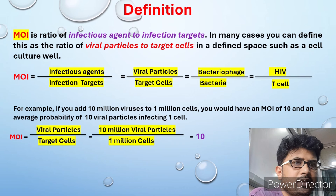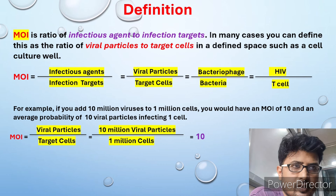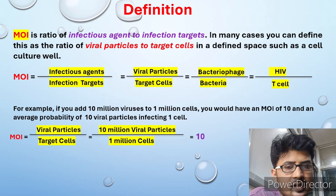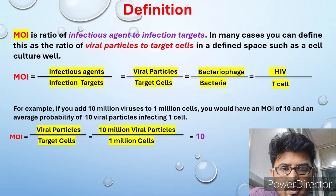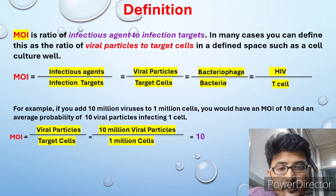If you consider the definition, MOI is nothing but the ratio of infectious agents to infection targets — viral particles to target cells in a defined space such as a cell culture well, or bacteriophage to bacteria in a culture environment. It may be a solid culture, a semi-solid culture in agar medium, or a liquid broth culture where bacteria and bacteriophage are present.